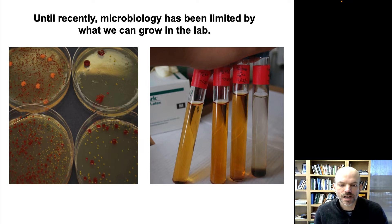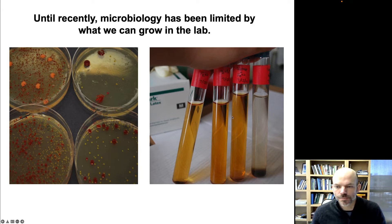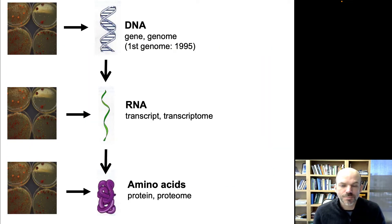We have DNA, RNA, and protein sequencing technologies to thank for our modern understanding of microbiology. Until these technologies came around, the only way we could discover new species and characterize them was to grow them in the lab. If you couldn't grow a species on a petri plate or in a media tube, we just didn't know it existed. We really didn't have an appreciation for the vast diversity of microbes until we could sequence their DNA, RNA, and protein.